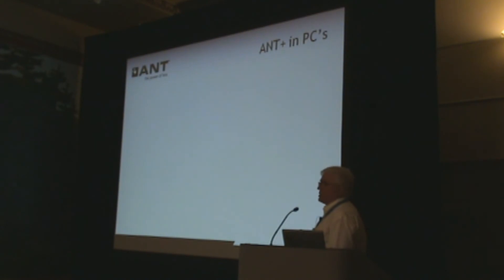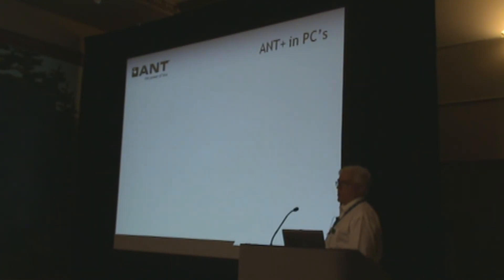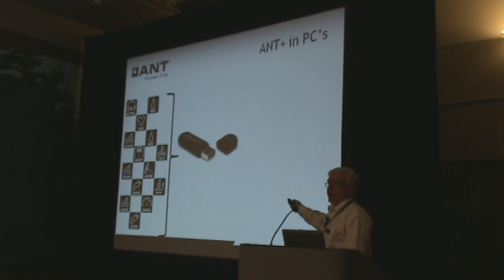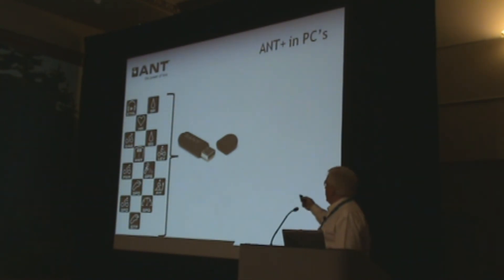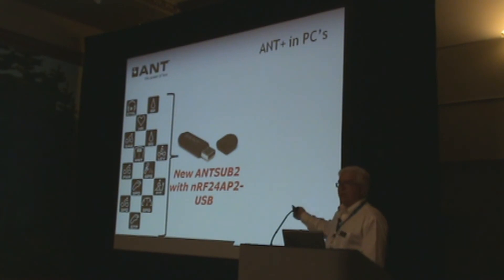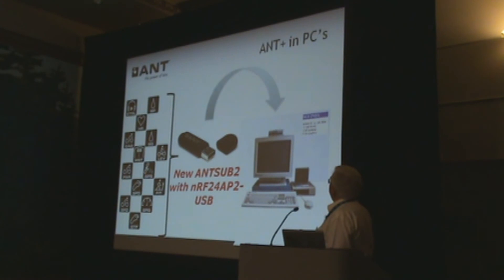We're looking at bridging things to get into other media you may not have on your site right now. ANT in PC takes all of those device profiles and puts them through a commercially available product available from our distributors. It's the new NRF24EP2-based USB 2.0 dongle — so all the new features Nordic has brought out: proximity, search mechanisms, and eight-channel capability. That's currently shipping in volume and it just plugs right into the PC.